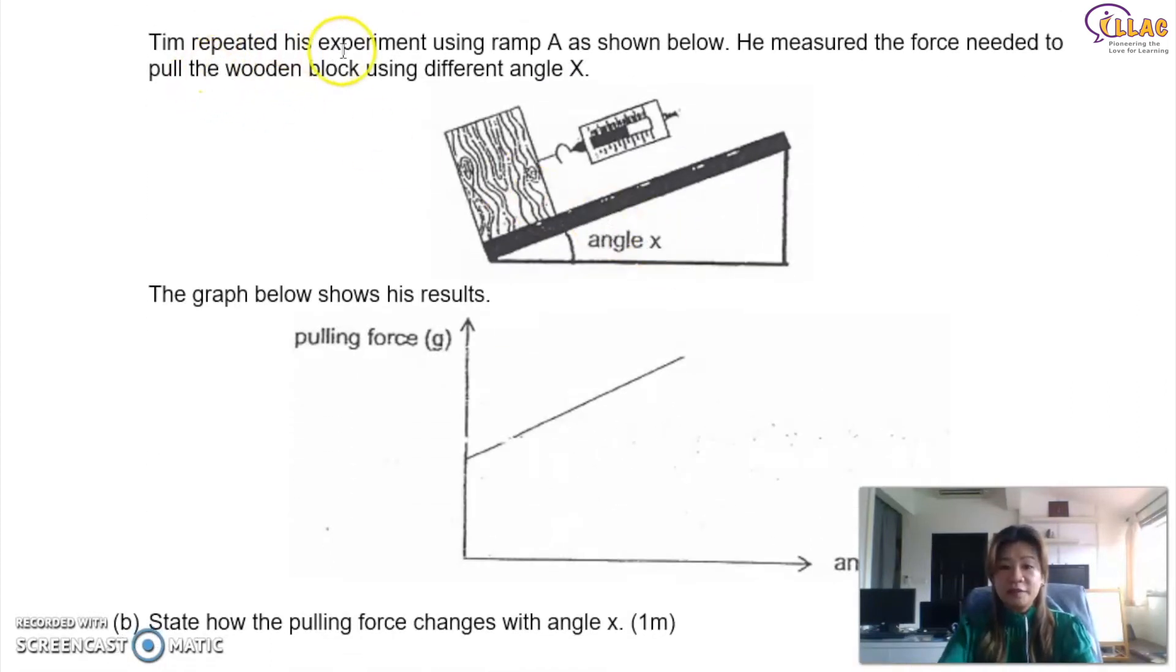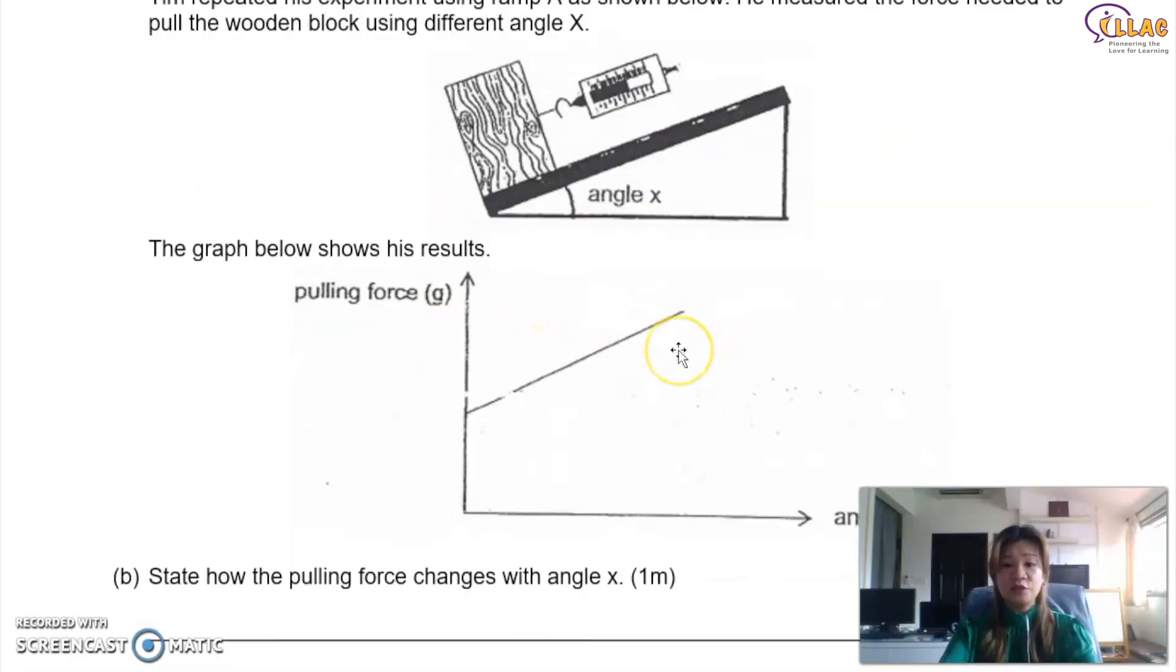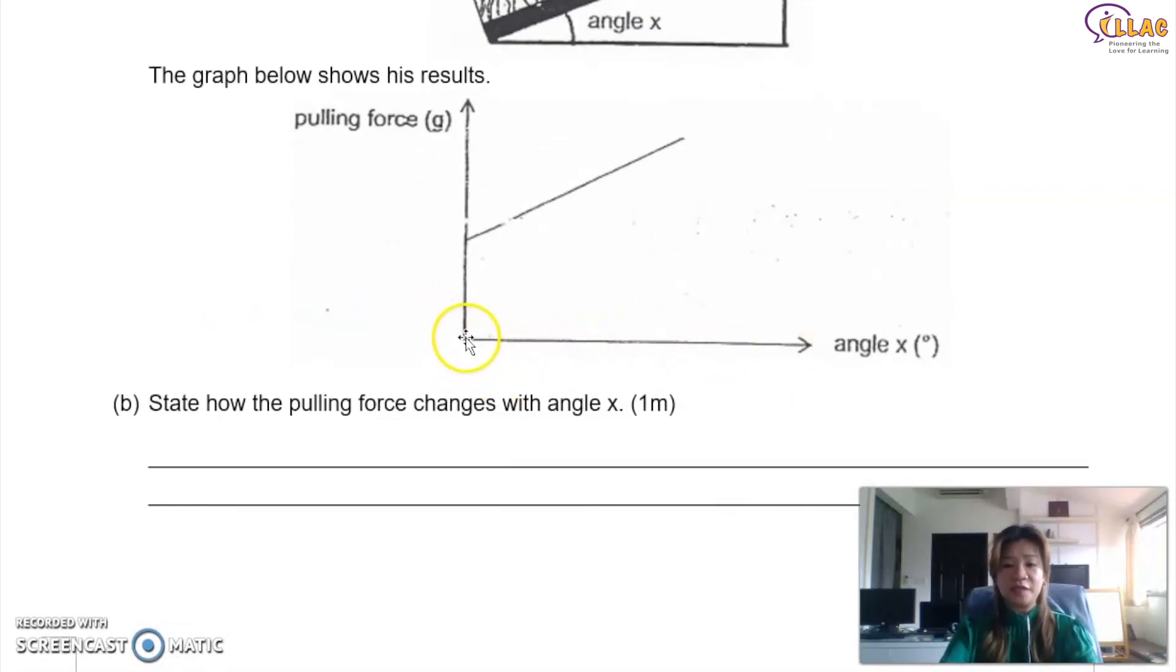And then the question carries on. Tim repeated his experiment using rem A as shown below. He measured the force needed to pull the wooden block using different angle x. So the graph below shows his results. So you notice that in this graph, children, if you don't know how to read graph, this is always how it happens. They won't write any numbers for you, but they point the arrow this way, which means you imagine this one is 0. It starts from 0. So 0, 1, 2, 3, 4, imagine that. So imagine the numbers going bigger. So it means that, and this is going upwards. So this is also 0 going upwards, the number getting bigger, which means the diagram of showing upwards, the graph of showing upwards shows you that the bigger the angle, the higher the force. Do you see that? Say again, the bigger the angle, because it goes this way, the number gets bigger, the higher the force. Why higher? Because it's going upwards. So that's how you answer relationship question, or this kind of graph question.